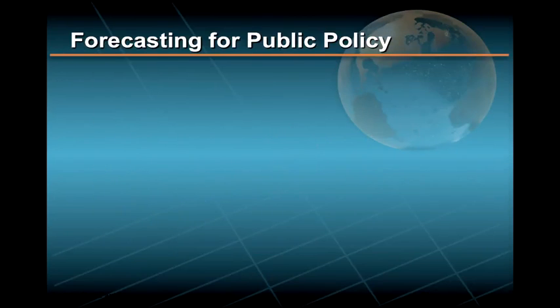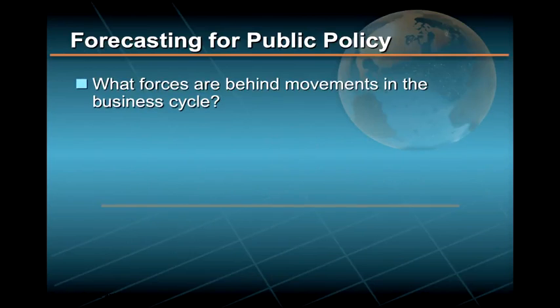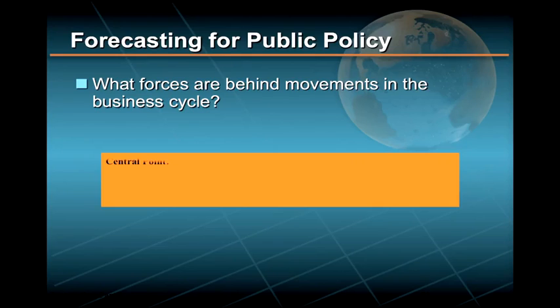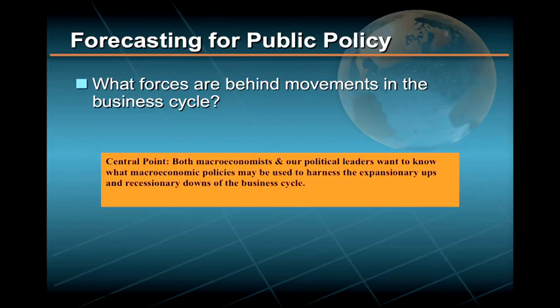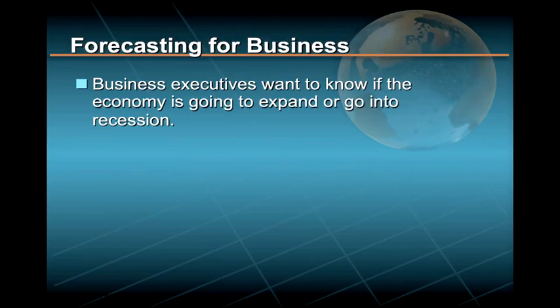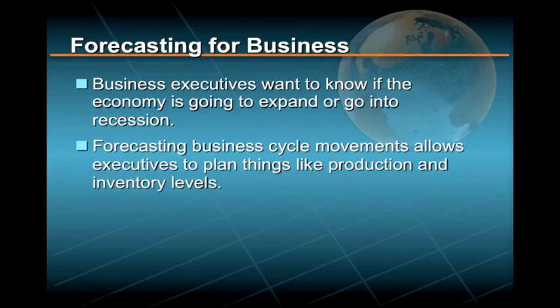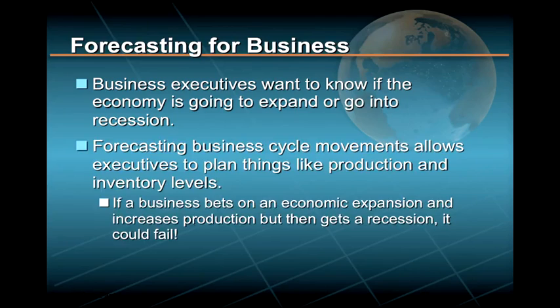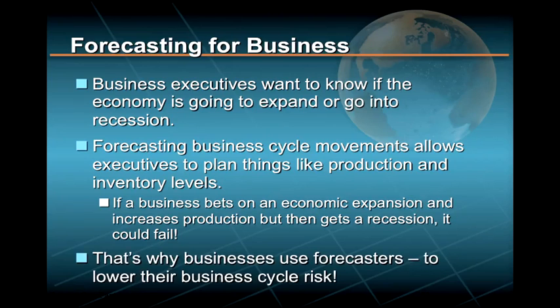The central concern of macroeconomists is to determine whether a recurring business cycle exists and what forces are behind it. Both macroeconomists and political leaders want to know what macroeconomic policies may be used to control or harness the business cycle. A central concern of businesses is to determine whether the economy is going into a contraction or expansion — with the right guess often being the difference between a big profit and a big loss. That is why many businesses rely on economic forecasting services to help them plan their production and marketing efforts.